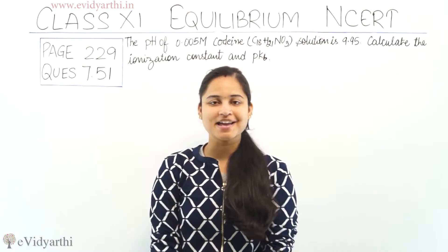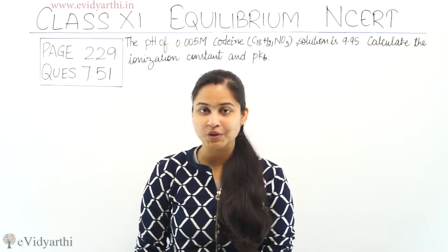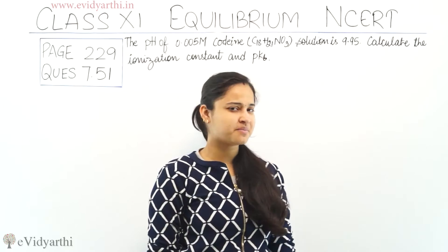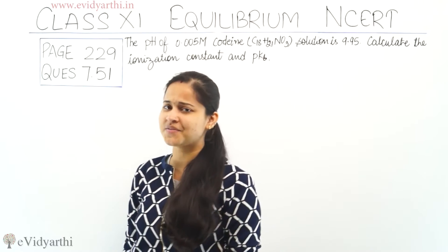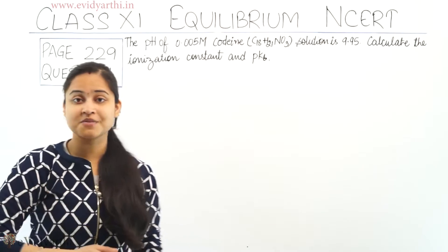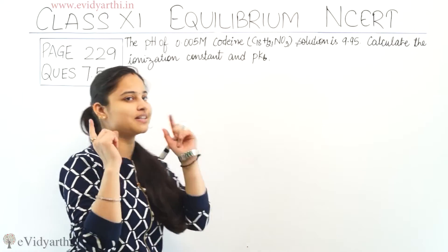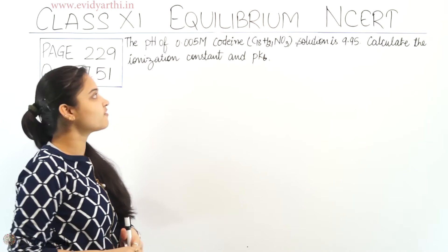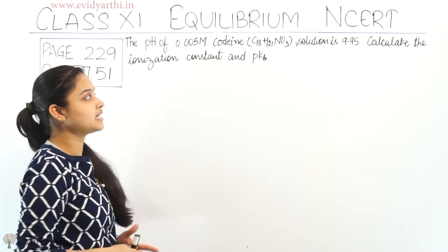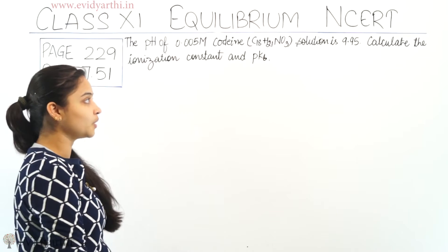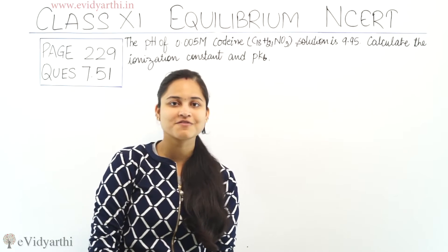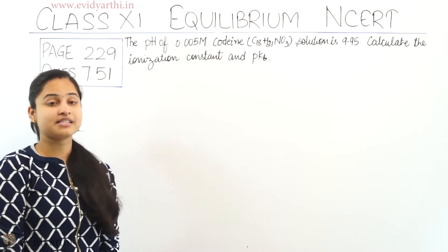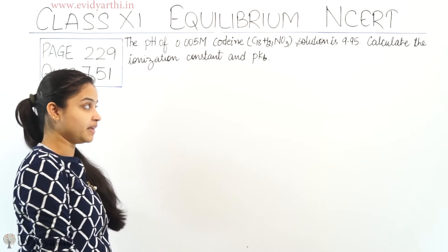Hello everyone, I am Rakhi and in this session I am going to discuss with you question number 51 which is on page number 229 of chapter number 7 Equilibrium, class 11th NCERT. The question is: the pH of 0.005 molar codeine (C18H21NO3) solution is 9.95. Calculate the ionization constant, that means Kb and pKb.